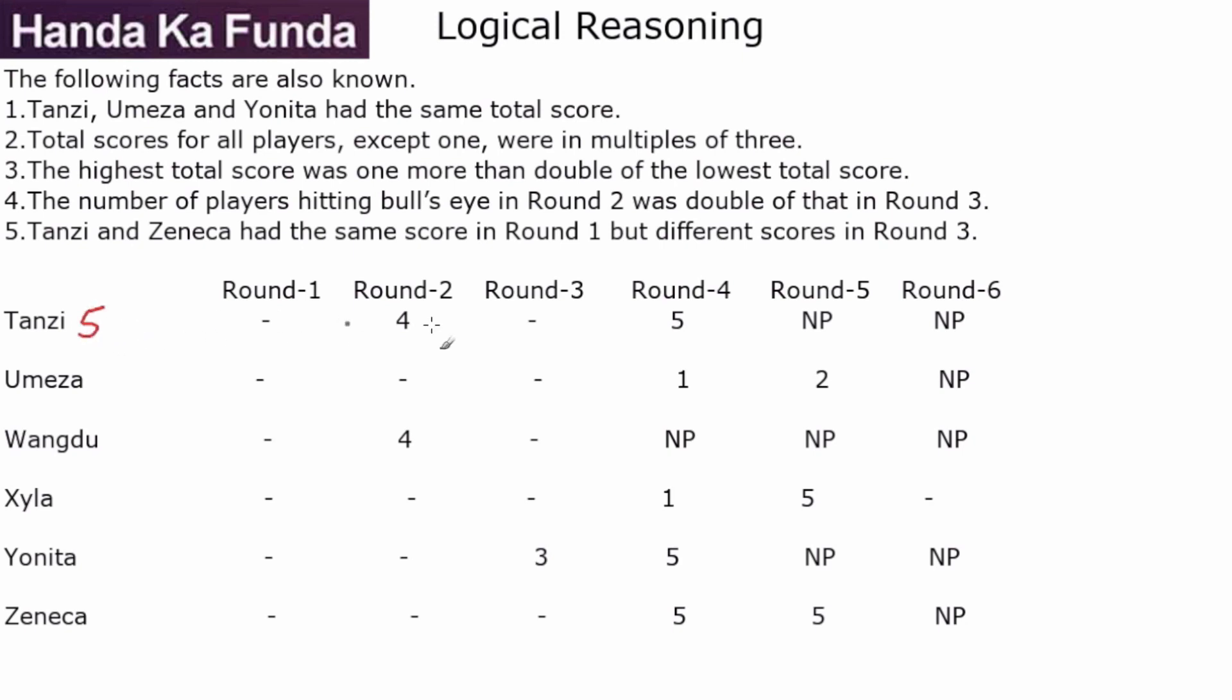So Tanzi must have a 5 in one of these two. On the other hand, Umeza had two scores in round 4 and round 5. That means it hit bull's eye twice. So Umeza should have a couple of fives. We don't know the third one. Wangdu never scored in rounds 4, 5, and 6. That means Wangdu, whatever it does, does not get a 5.